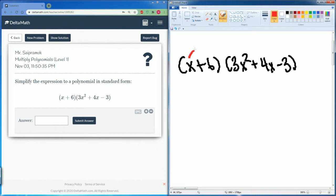So distribute x to the 3x. x times 3x squared gets you 3x to the power 3. Then x times 4x gets you 4x squared. Then we do that one more, x times negative 3 gets you negative 3x. So the x was distributed to all three terms here.